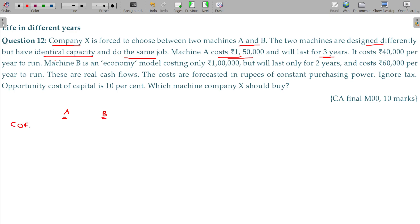Machine A costs 1.5 lakhs and will last for 3 years. Either a cash outflow being 1.5 lakhs, and life, number of years being 3 years. It costs 40,000 rupees per year to run. Cash outflow at every period being 40,000 per year.